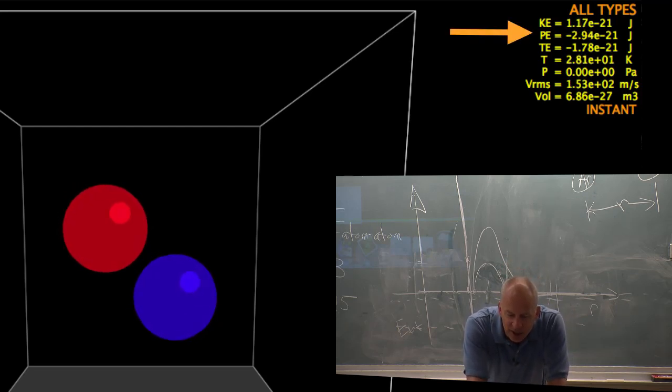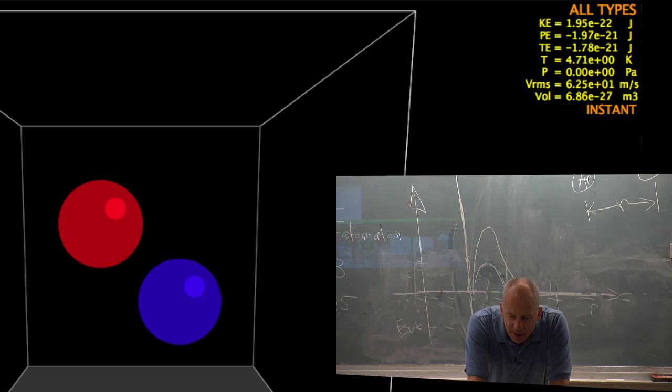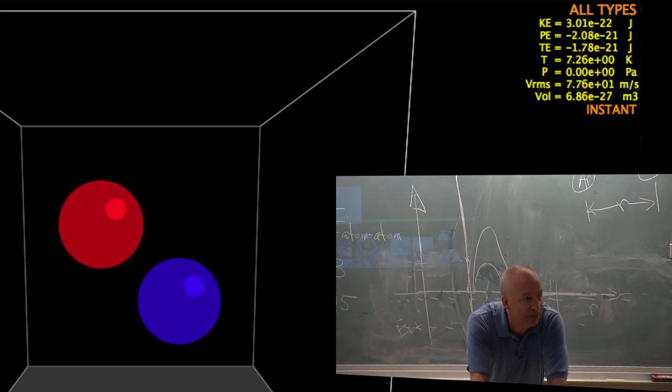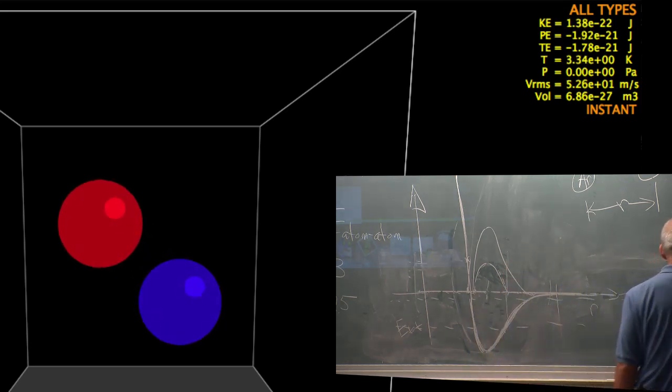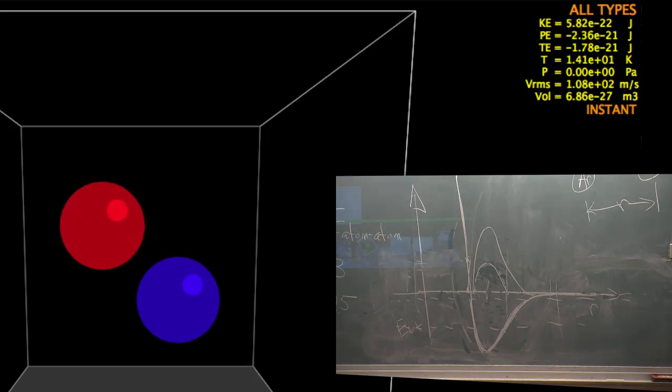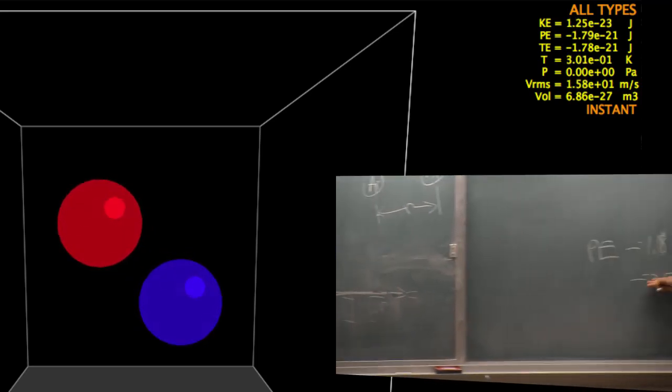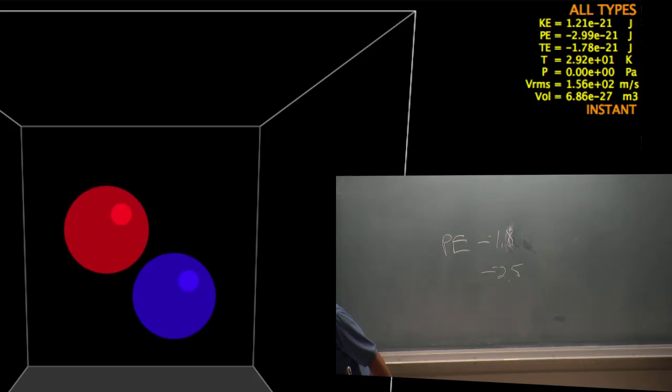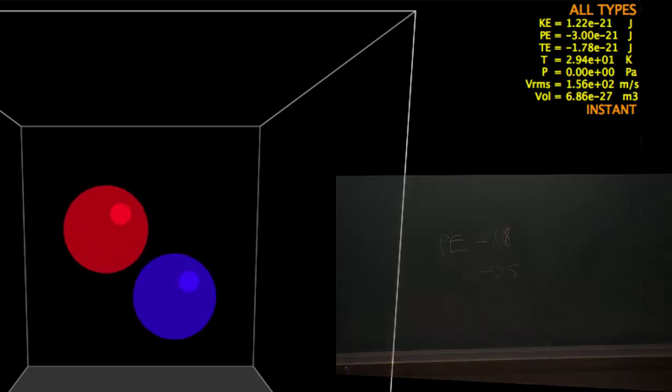Potential energy looks like it's oscillating between minus 1.8, maybe, yeah, about minus 1.8 and minus 2.5 or something. I'm not sure exactly if I can see that well. Potential energy seems to be oscillating something like that between minus 2.5 and minus 1.8.